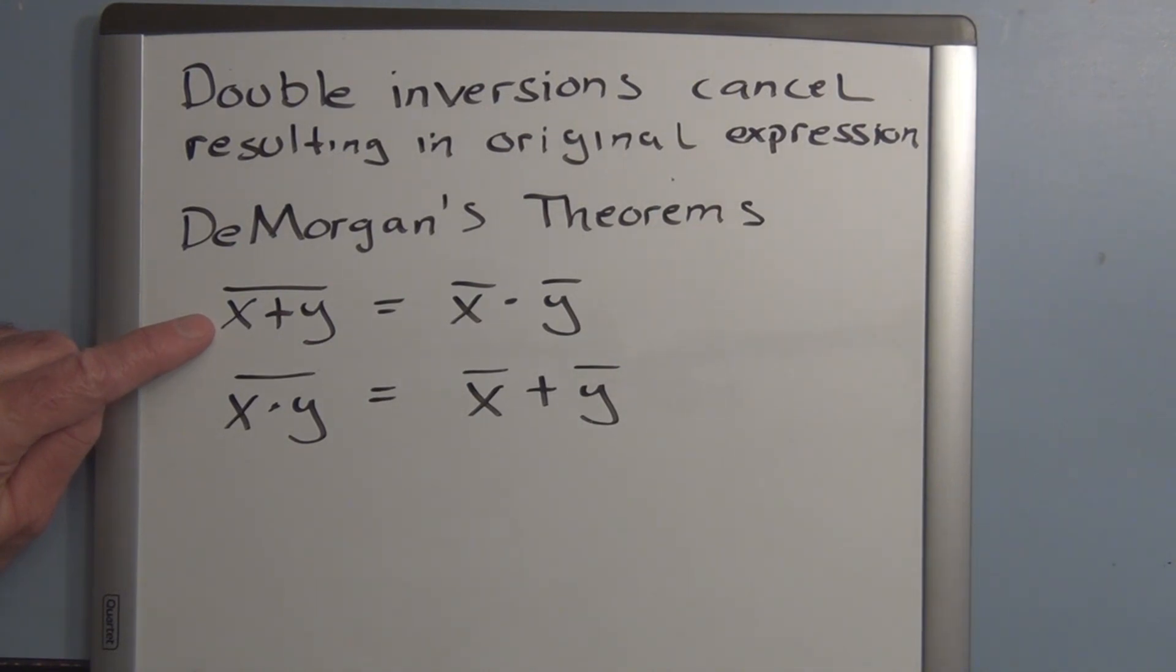Where if we had an OR gate with an inverter at the end, which is a NOR gate, that's equivalent to an AND gate with two inverters on the input. So you invert the inputs before they go into the AND gate. And here we have an AND gate with an inverter on the output, which is a NAND gate.